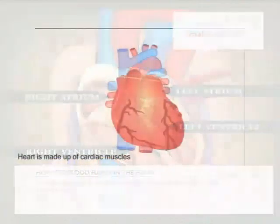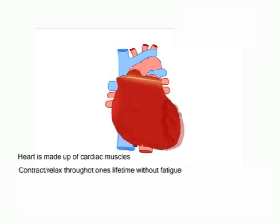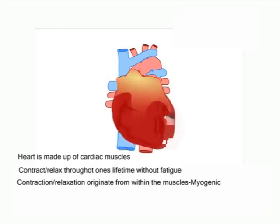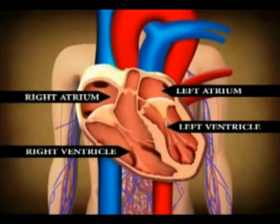The heart is made up of specialised muscles called cardiac muscles, which contract and relax continuously throughout one's lifetime without fatigue. The contraction and relaxation originate from within the muscles — cardiac muscles are said to be myogenic. The walls of the auricles are thinner than those of the ventricles. Auricles pump blood to ventricles, while ventricles pump blood to the rest of the body. Valves open to allow blood flow in one direction only and close when blood tries to flow back. Valves are attached to the walls of the ventricles by valve tendons or tendinous cords, which prevent inversion of the valve flaps.